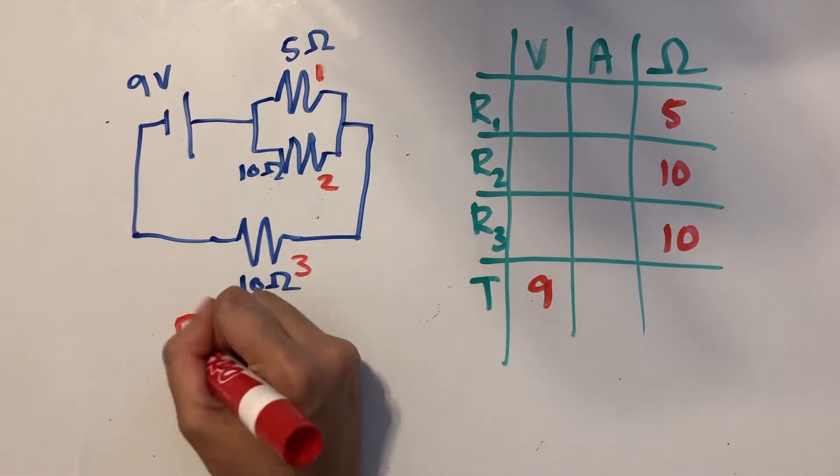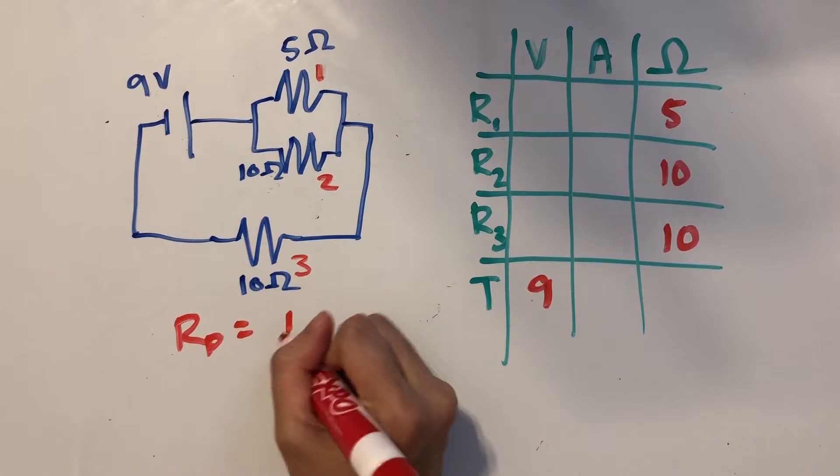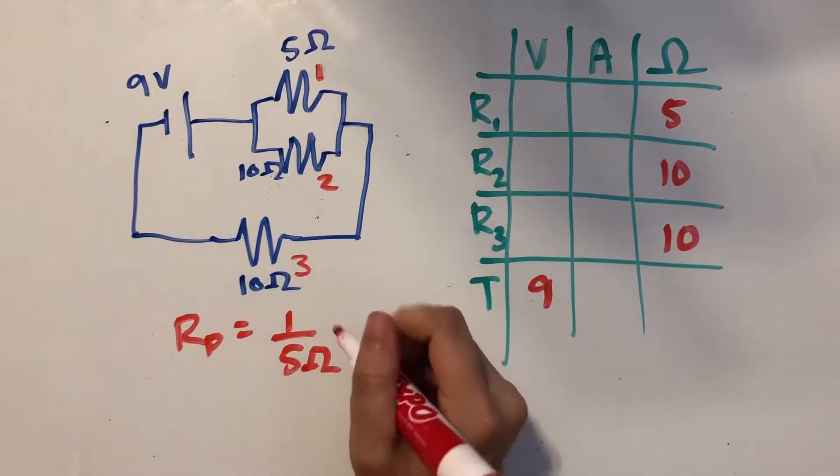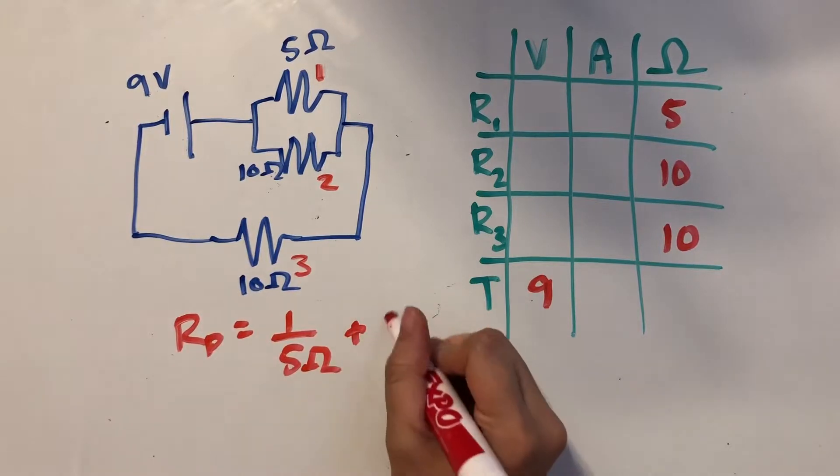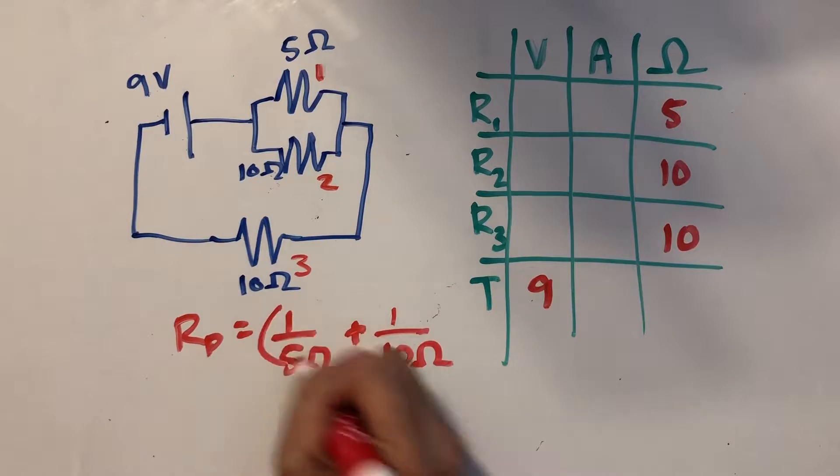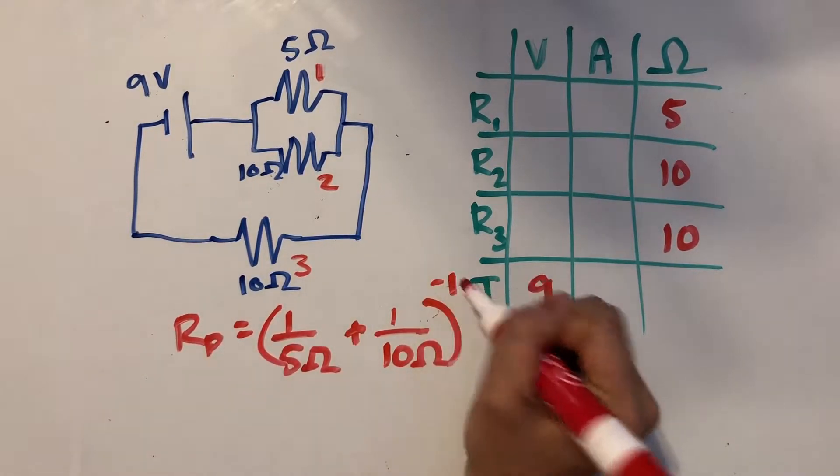To find the equivalent resistance, we'd first take the inverse of the first resistor, so that's going to be 1 over 5 ohms, and then we add that to the second resistance, so that's going to be 1 over 10 ohms, and then we take the reciprocal of that.